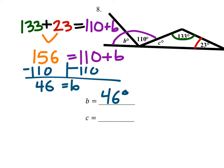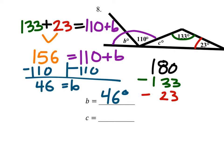Now that also helps us find C. What I'm going to do is take 180 for just the triangle, then subtract the two angles that were given — 133 and 23 — which gives us angle C: 24 degrees.